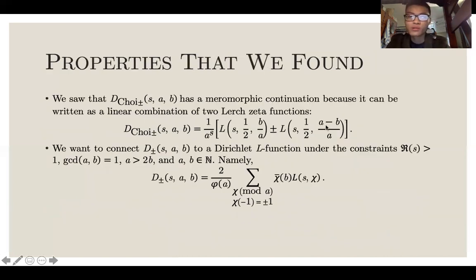We found some interesting properties as well. We saw that D-Choi plus minus can be written as a linear combination of two Lerch zeta functions as follows. We also want to connect the non-alternating series to Dirichlet L functions under these constraints. D plus minus sab is equal to 2 over phi of a times the sum of conjugate of chi of b times L of s chi.